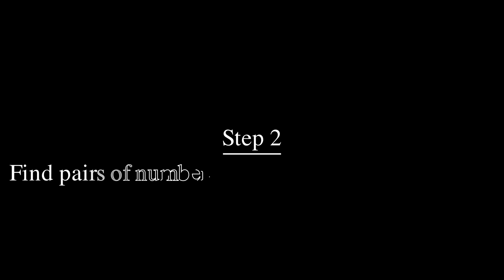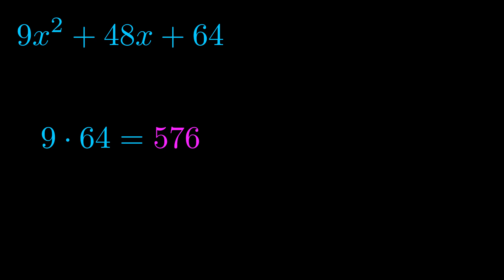Step two is to try to find all of the pairs which multiply to this number. Now it turns out you don't really need to find all of them but go ahead and write down as many numbers as you can that multiply to the magenta value for now. Pause the video and resume when you're ready to continue.